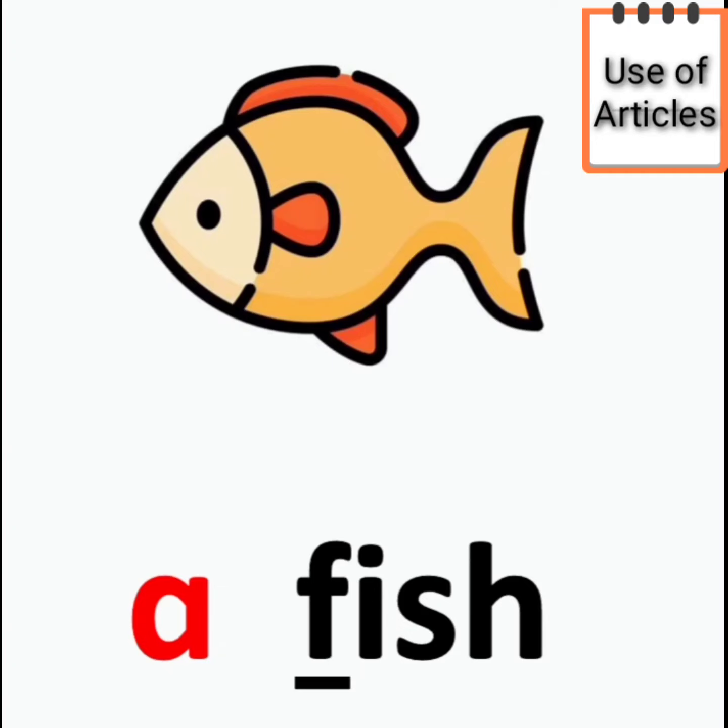A fish. Again, children, the word is starting with a consonant F. So, we will use A, article A. And we will say a fish.